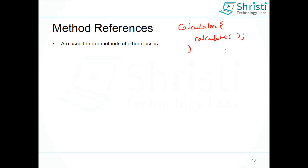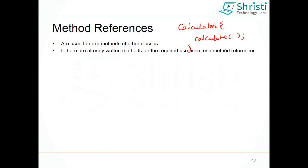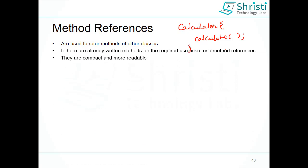Method references means referring to a static or a non-static method or a constructor instead of implementing the abstract method using lambda expression or anonymous classes. These method references are very compact and more readable. We use the double colon operator for method references. There are four kinds of method references.